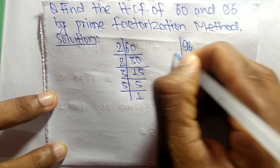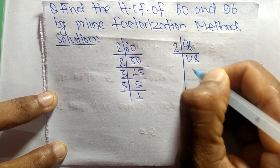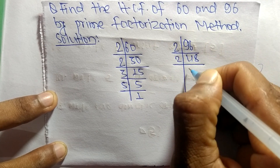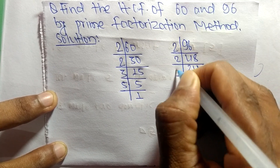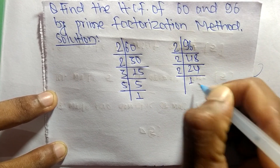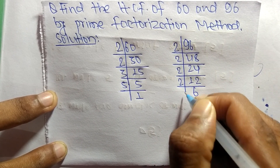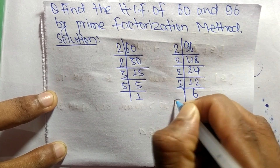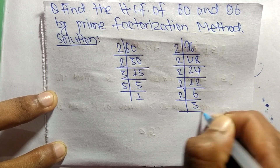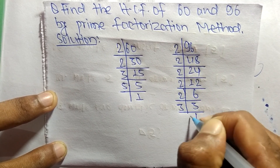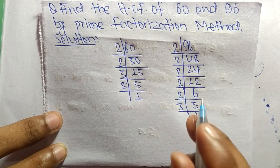The prime factors of 96 are: 2 times 48, meaning 96. 2 times 24, meaning 48. 2 times 12, meaning 24. 2 times 6, meaning 12. 2 times 3, meaning 6. And 3 times 1, meaning 3.